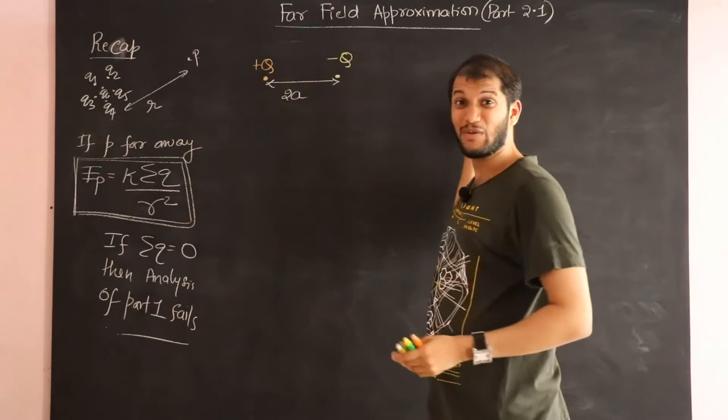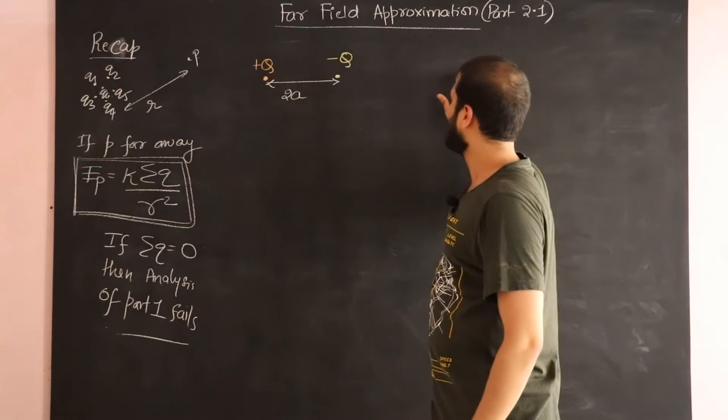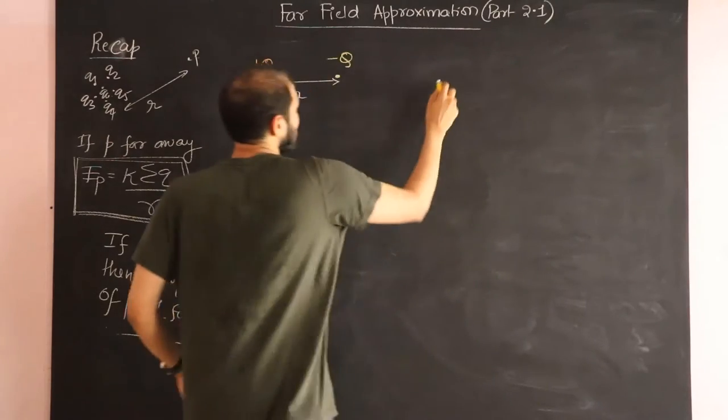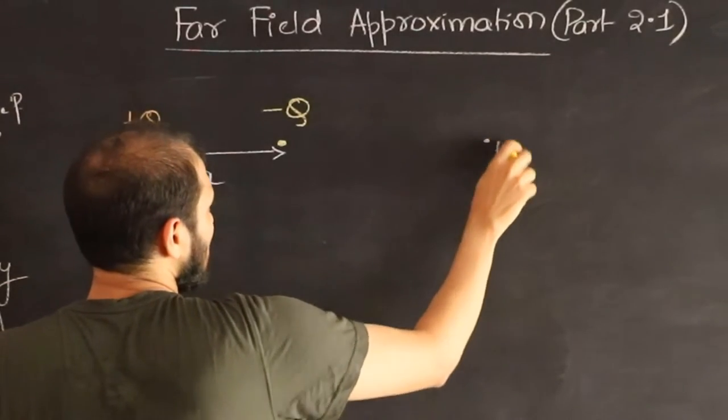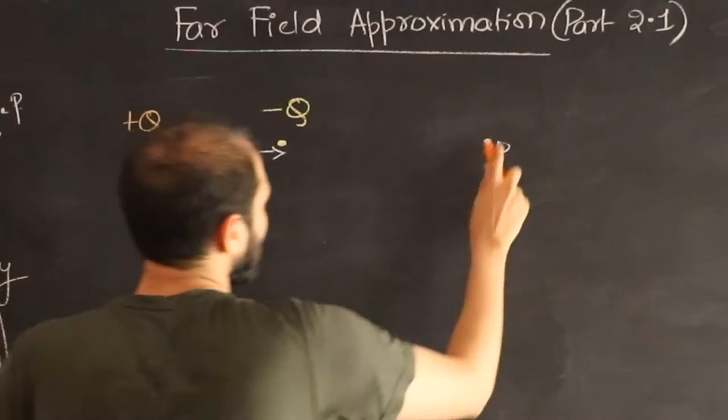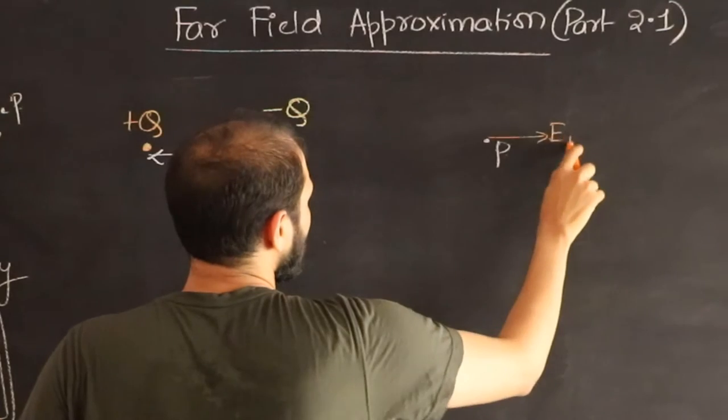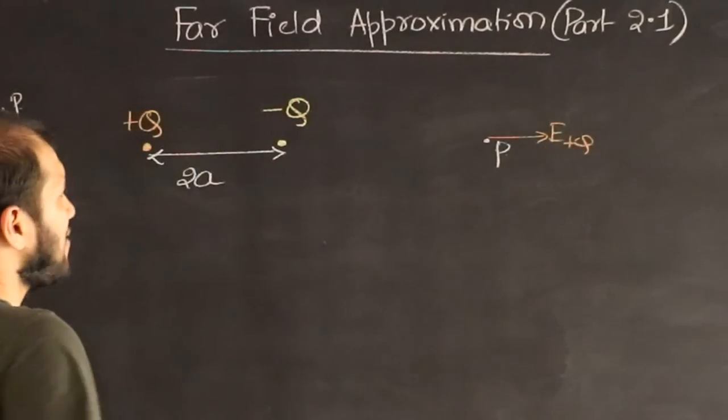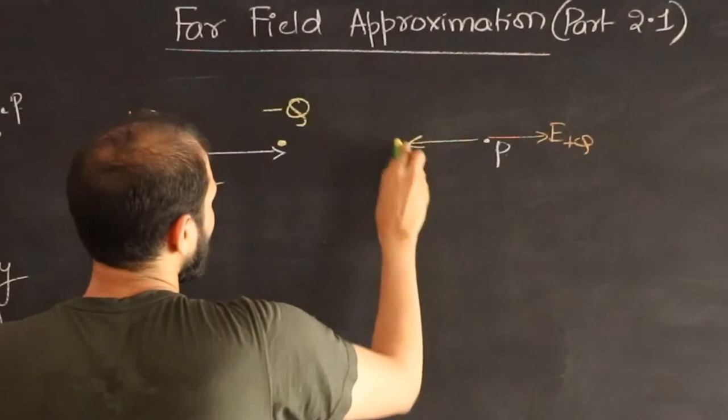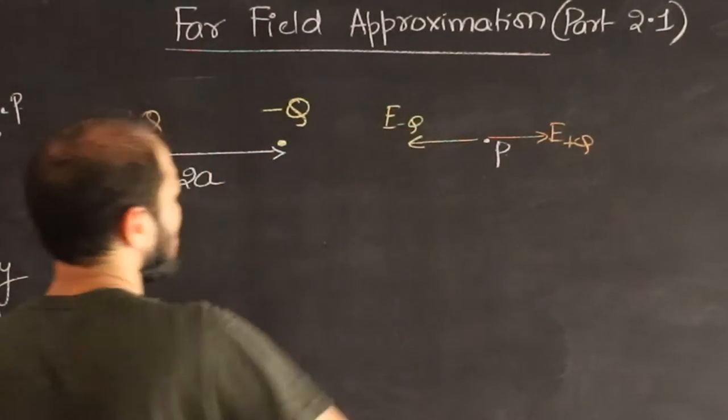But do you notice now that the electric field of plus Q, so let me draw that over here. So let's say here is that point P. The electric field of plus Q is going to be in this direction. This will be the electric field of plus Q. And the electric field of minus Q will be in this direction. This will be the electric field of minus Q.